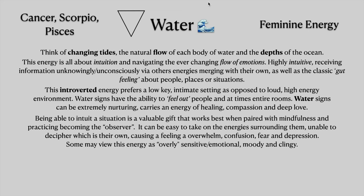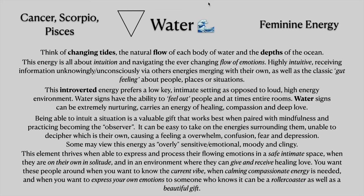Being able to intuit a situation is a valuable gift that works best when paired with mindfulness and practicing becoming the observer. It can be easy to take on the energies surrounding them, unable to decipher which is their own, causing a feeling of overwhelm, confusion, fear, and depression. Some may view this energy as overly sensitive, emotional, moody, and clingy. This element thrives when able to express and process their flowing emotions in a safe, intimate space, when they are on their own in solitude, and in environments where they can give and receive healing love. You want these people around when you want to know the current vibe, when calming compassionate energy is needed, and when you want to express your own emotions to someone who knows it can be a rollercoaster, as well as a beautiful gift.